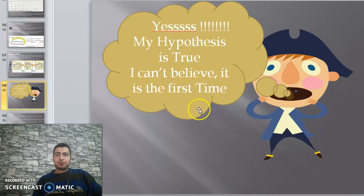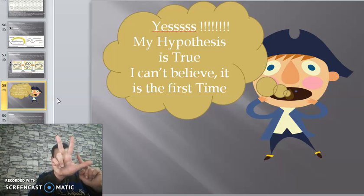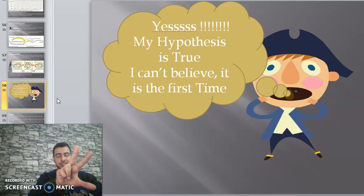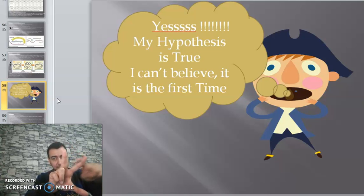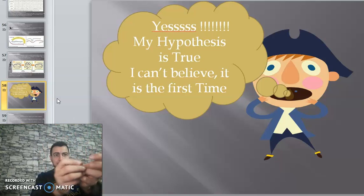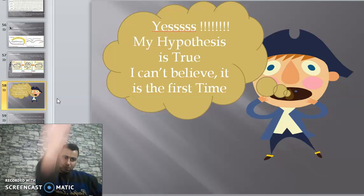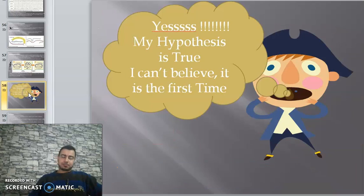Denaturing agents or reducing agents are substances that break down the SS bonds - the disulfide bonds. The SS bond is the bond between amino acids that gives the protein its shape. So the function of a protein depends on: the type of amino acids, the arrangement and sequence of amino acids, the number of amino acids, and the 3D structure of the protein.